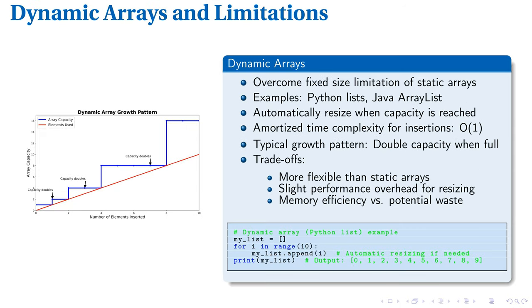Dynamic arrays solve static limitations elegantly. Unlike fixed size arrays, they grow automatically when needed, exemplified by Python lists and Java ArrayLists. This flexibility comes with a trade-off: slight performance overhead for resizing operations.